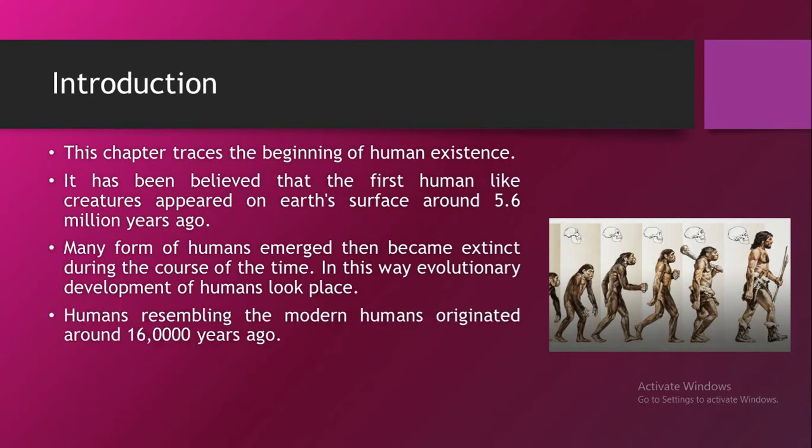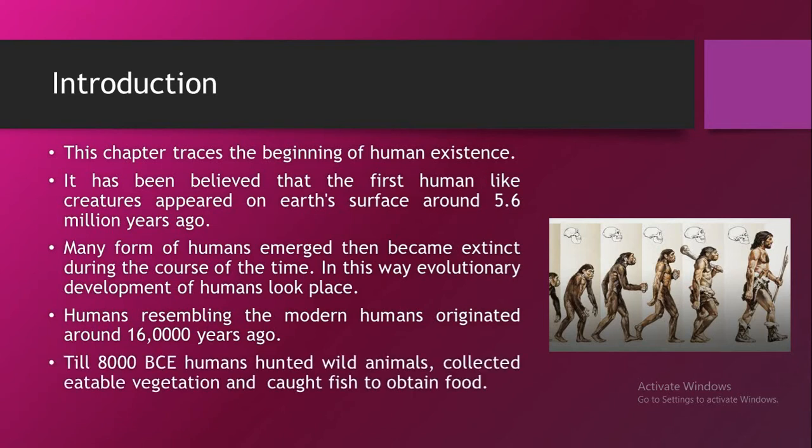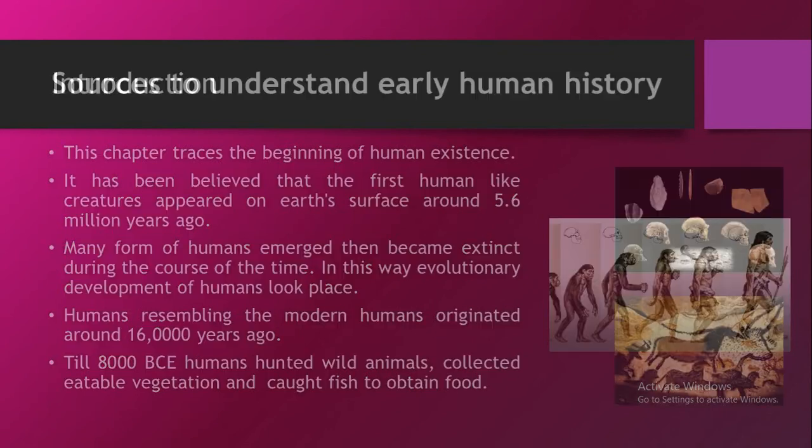Humans resembling modern humans originated around 160,000 years ago. Till 8,000 BCE, humans hunted wild animals, collected edible vegetation and caught fish to obtain food.